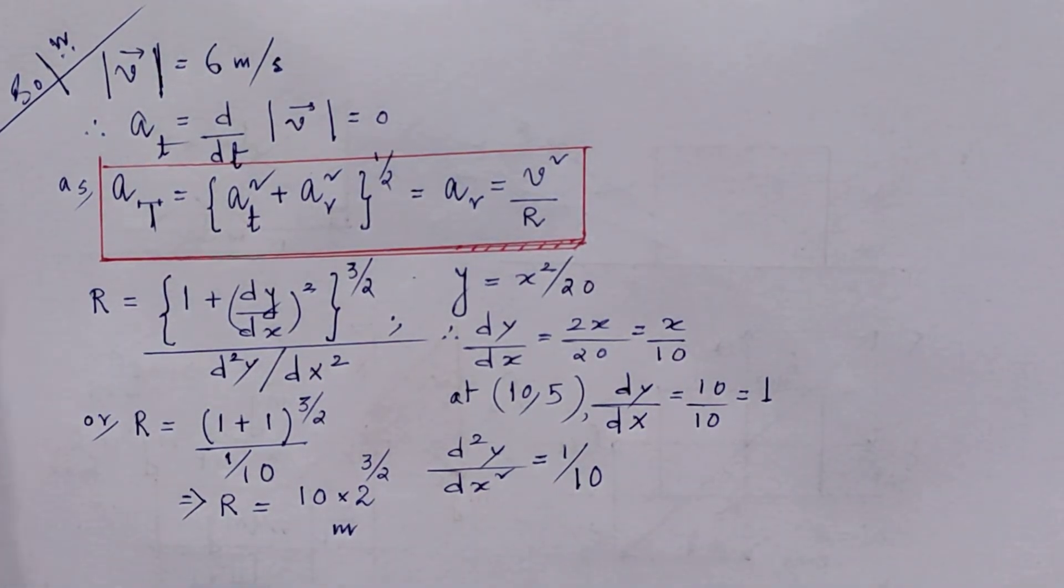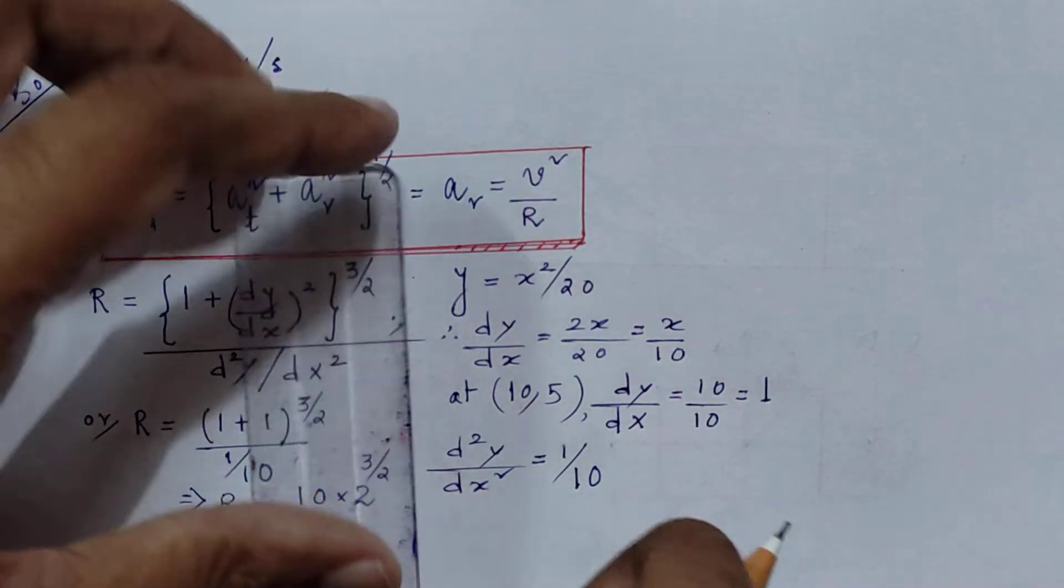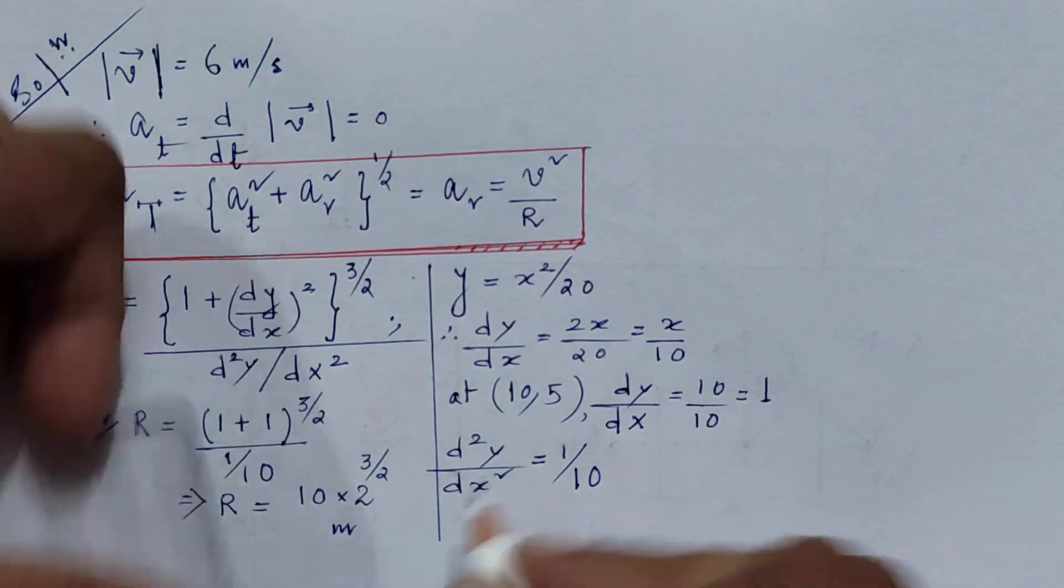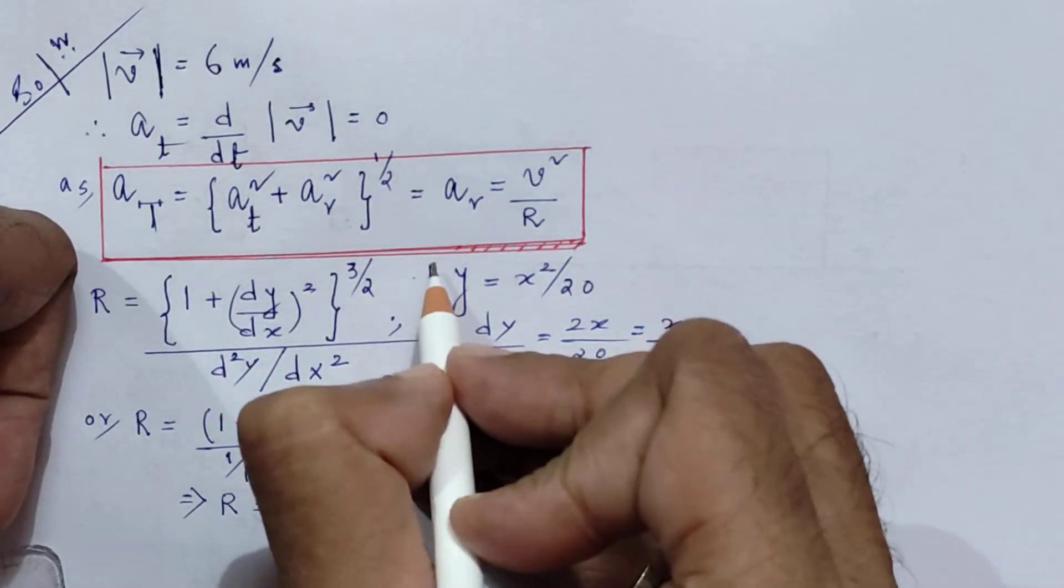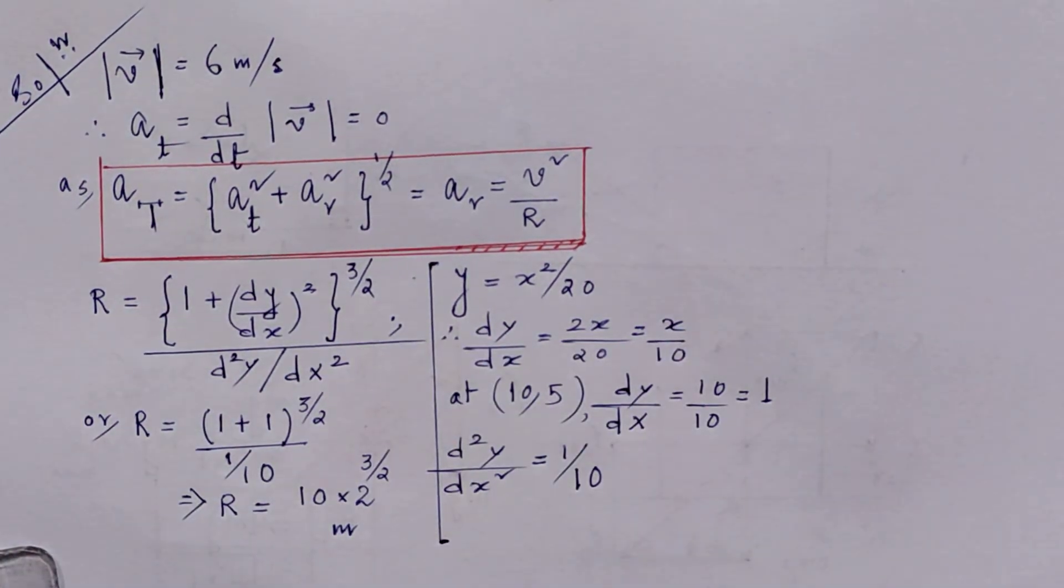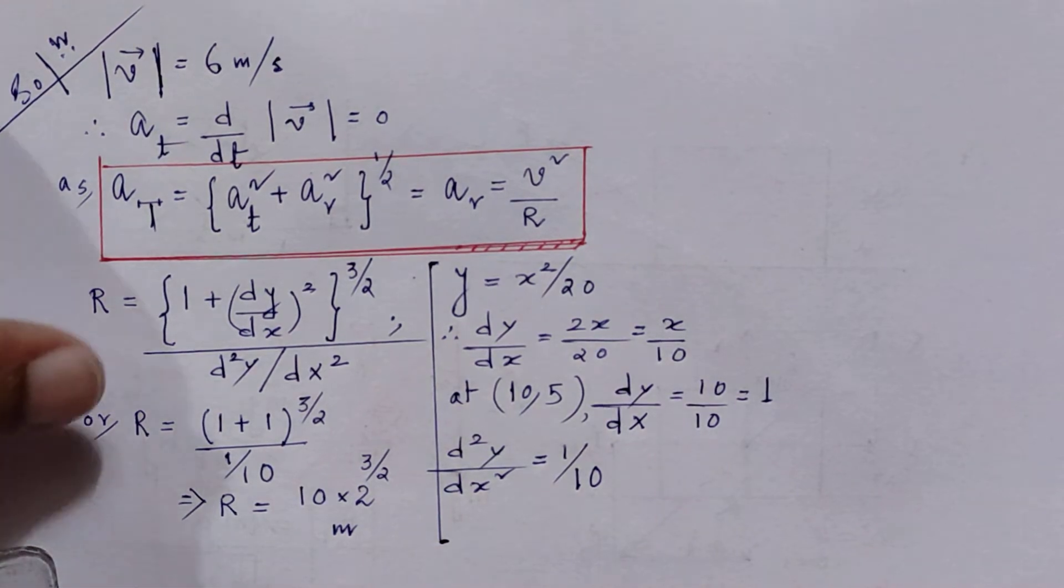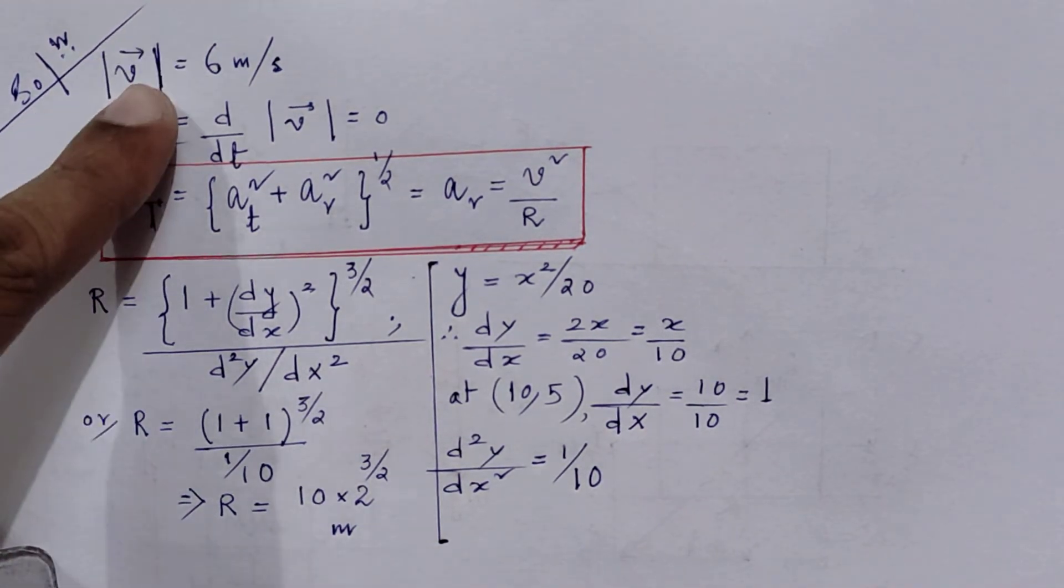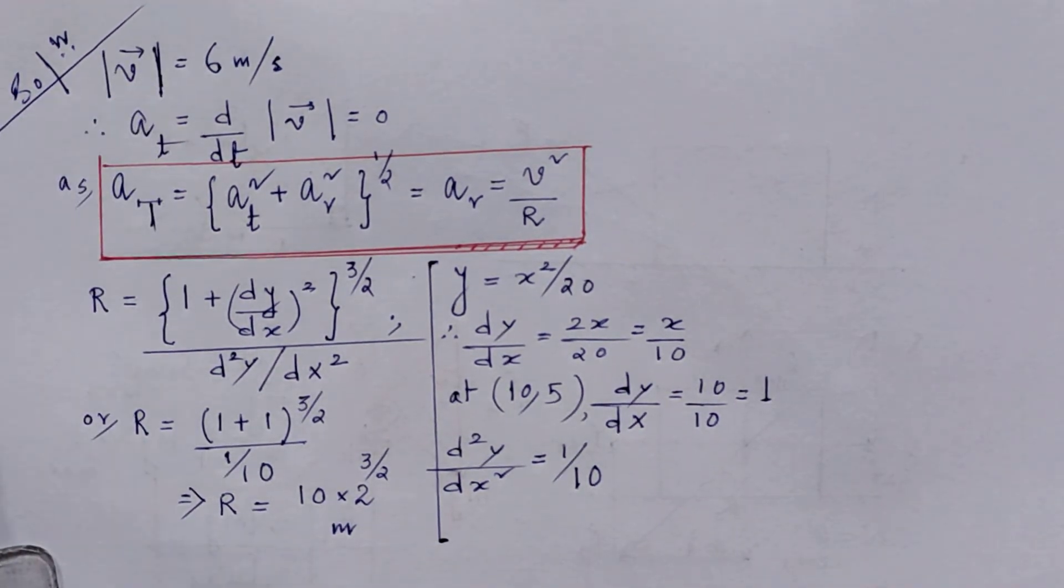So this is the radius of curvature of that parabolic trajectory at the mentioned coordinate point (10, 5). Once we know this, we already know v, so we can find out the radial acceleration.